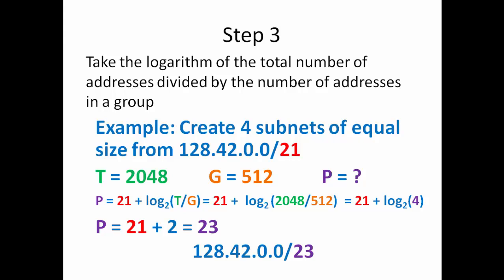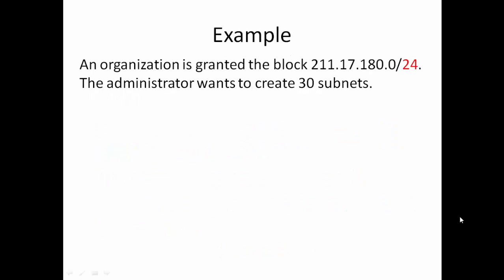Let's start an example. An organization is granted the block of 211.17.180.0 with a net mask of 24. And the administrator wants to create 30 subnets. Our first thing we're going to do? Step 1. Figure out our total number of subnets. So that's T for total number of subnets is 2 to the 32 minus 24 or 2 to the power of 8 which is 256.